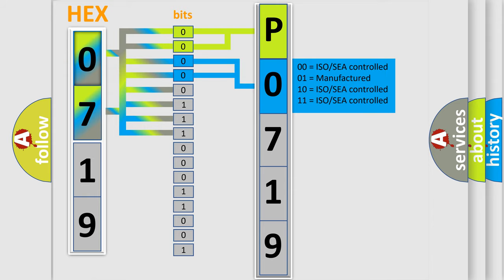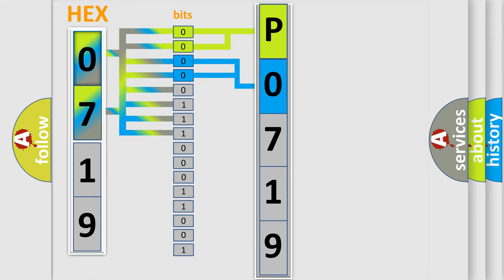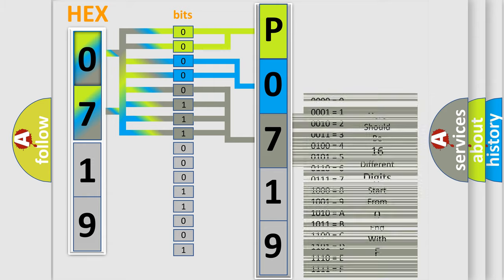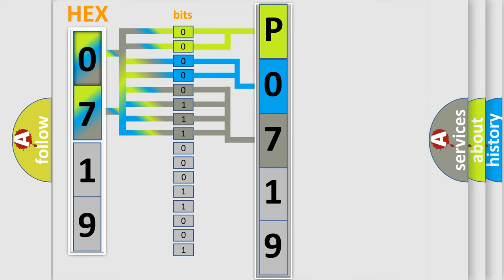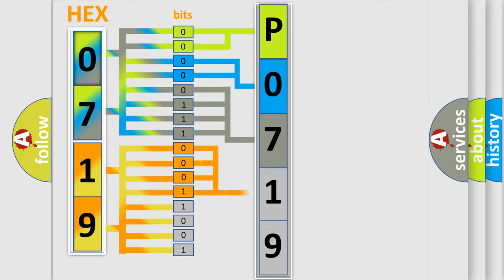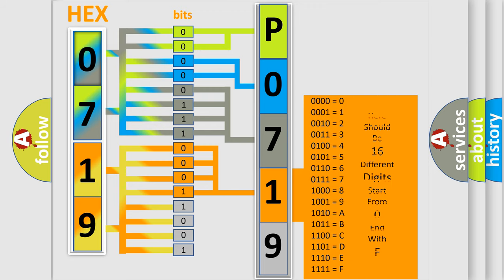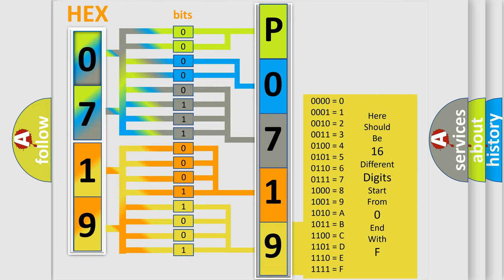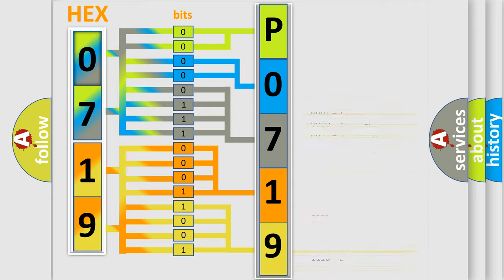The last bits of the first byte define the third character of the code. The second byte is composed of a combination of eight bits. The first four bits determine the fourth character of the code, and the combination of the last four bits defines the fifth character. A single byte conceals 256 possible combinations.